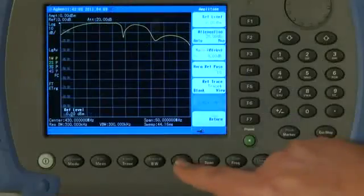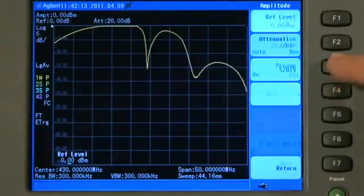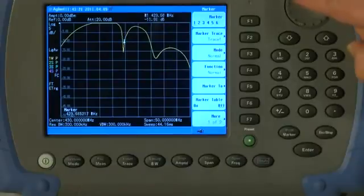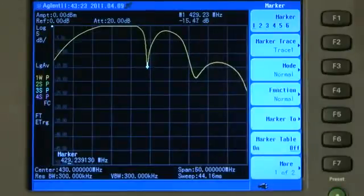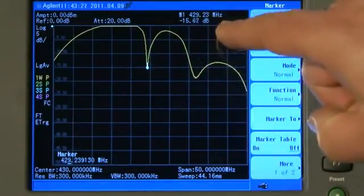I will just press the Amplitude button and select a scale per division of, say, 5 dB per division. And if I put a marker on the trace and turn the knob, you can see we have a good return loss there in the notch of the filter of about minus 15.5 dB.